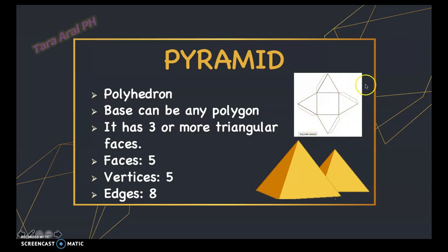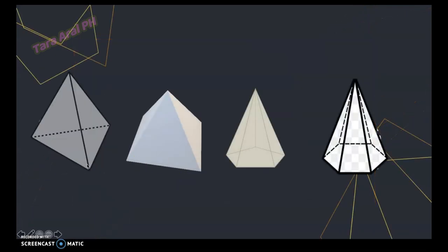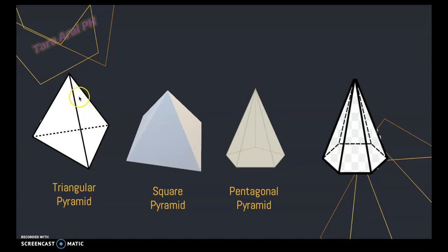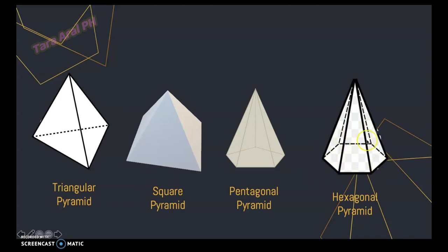All of the lateral faces of a pyramid are triangles. We have also a triangular pyramid because the base is a triangle with three triangular faces, a square pyramid with four triangular faces, a pentagonal pyramid since the base is a pentagon with five triangular faces, and a hexagonal pyramid since it has six sides for the base with six triangular faces.